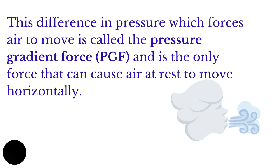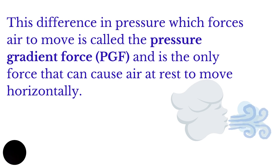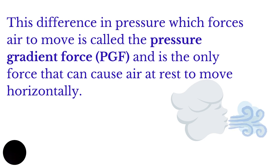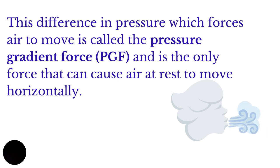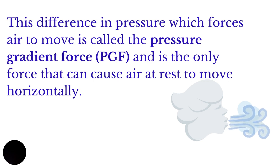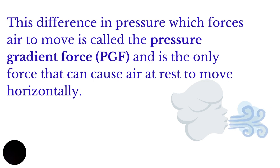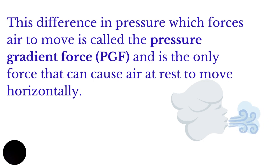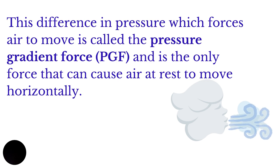This difference in pressure that causes the horizontal movement of air that we call wind is the first force we are going to be looking at. It is called the pressure gradient force, and sometimes we abbreviate it as PGF. Unlike the other forces, pressure gradient force has the ability to cause air at rest to actually start moving horizontally. For the other forces, the air has to be in motion first, and then they will either affect the speed or the direction of the wind. So pressure gradient force is the initial force — it's the force that initiates the winds.